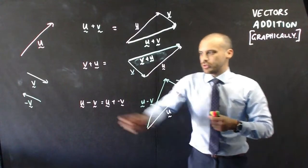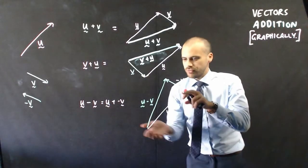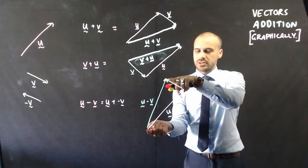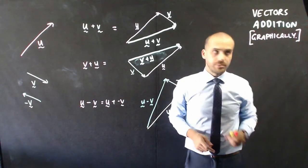Alright, so pretty straightforward. The first thing you do is write the first one, then you take the next one and place it on top of that. Then you draw a line from the beginning to the end. If it's negative, flip it.